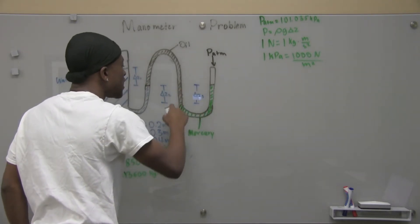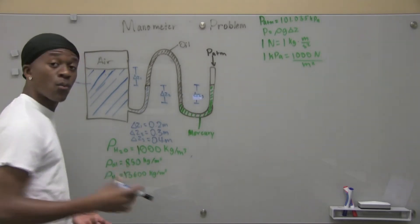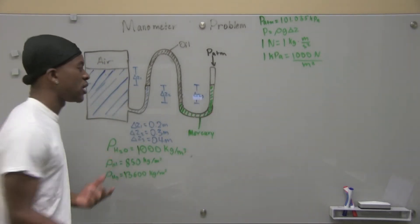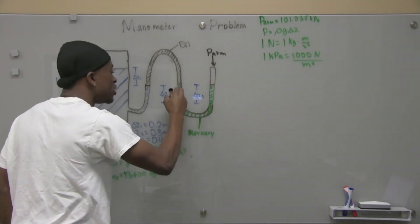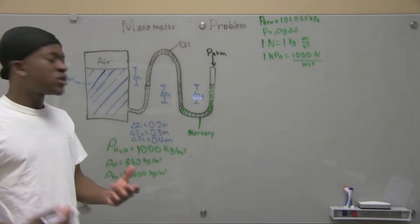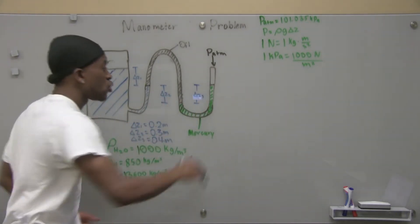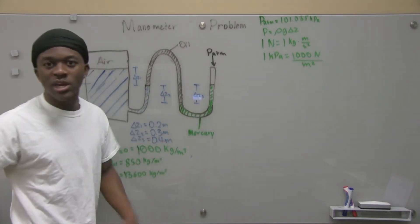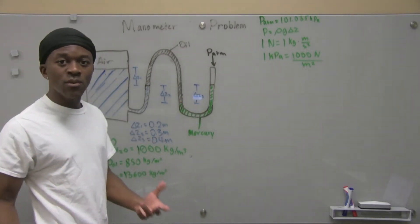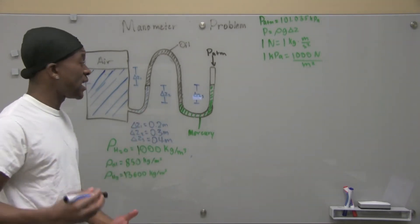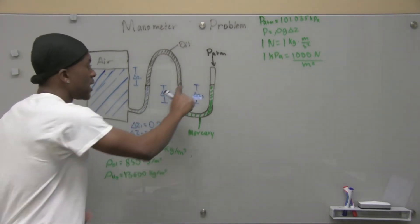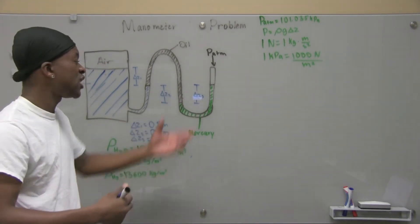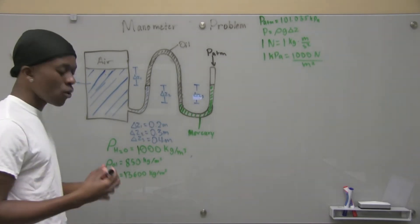When we get to this point, we can actually ignore everything that went on below it, because what goes on is we're increasing in pressure then reducing in pressure — so we sort of add and then subtract the same thing. Anything past this point, because this is where the fluids change, we can ignore. The only thing we take into account is the difference in altitude from when a fluid starts to when it ends and changes to the next fluid.